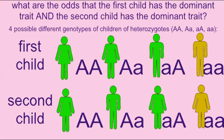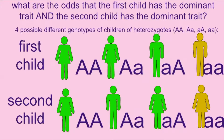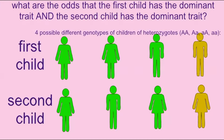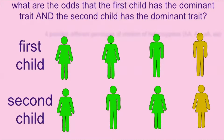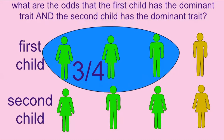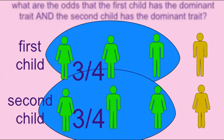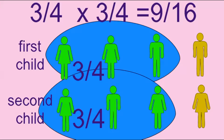If two carriers for a recessive Mendelian trait have children, then on average, three-quarters of their children will possess the dominant phenotype and one-quarter will have the recessive phenotype. If one were to ask what were the odds that the first child would possess the dominant phenotype and the second child would also possess the dominant phenotype, one would use the law of the product and multiply three-quarters by three-quarters, to come up with the probability that both children possess this dominant trait, which is 9/16.